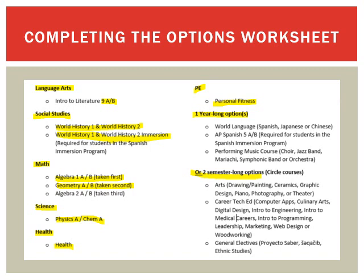Lastly, students select either one full-year course option or two semester-long options. For the one-year-long options, World Language is available — we offer Spanish, Japanese, and Chinese — as well as Performing Music courses. Students in the Dual Language Spanish Immersion program would select AP Spanish AB, which is required for that program.